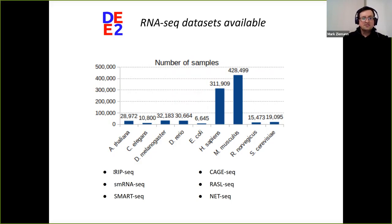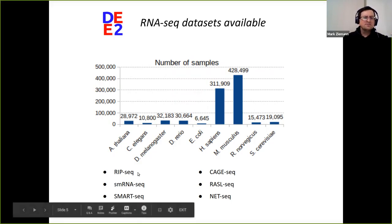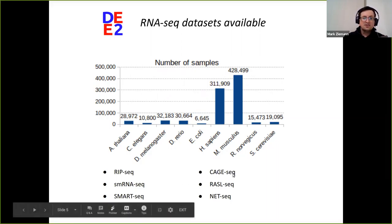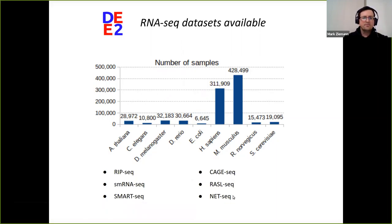DEE2 covers not just standard RNA sequencing, but derivatives such as enrichment sequencing, small RNA sequencing, certain types of single-cell sequencing like SmartSeq, CageSeq, RazzleSeq, and NetSeq, just for some examples. Overall, currently DEE2 has roughly 8 trillion reads in its database.